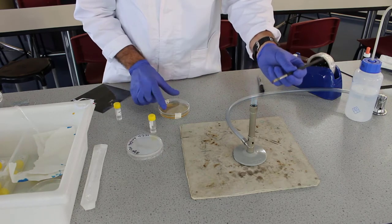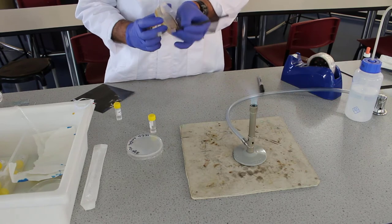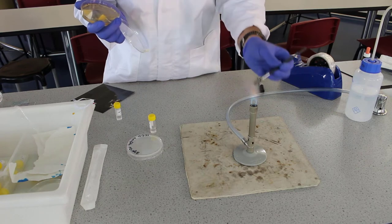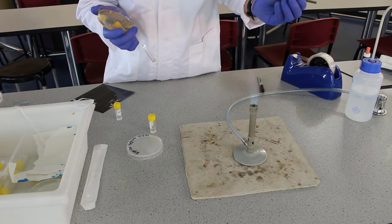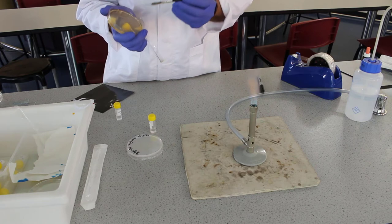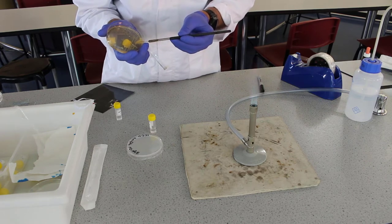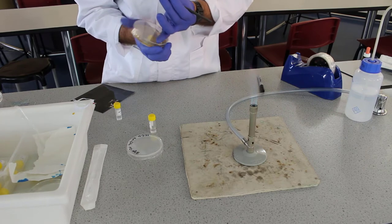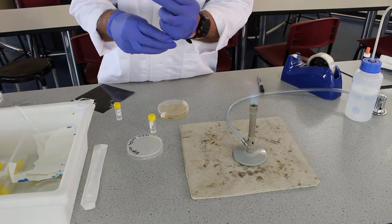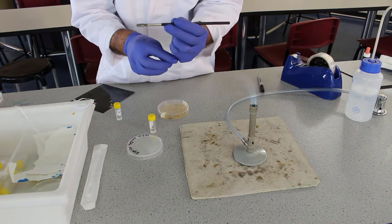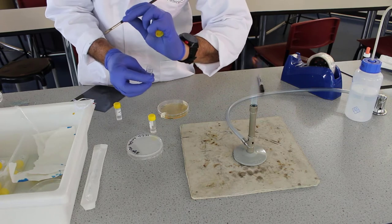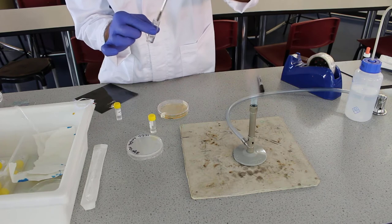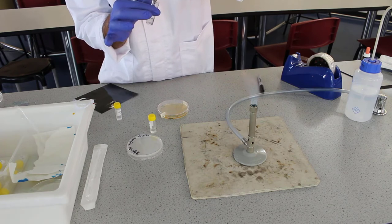Flame our loop and we're going to take some single colonies from our master plate. Flame the loop again. Take some single colonies from our master plate. Not very much. Now I'm going to use my little finger to hold the lid and then we're going to put the loop inside and give it a shake. Shake off that bacteria and it's going to make it a little bit cloudy.